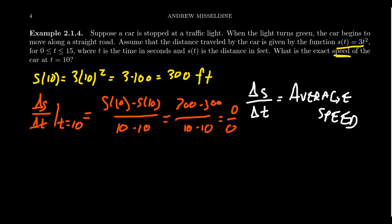The problem is that the difference quotient measures a change between two points — we need two different points in time. In order to compute the so-called instantaneous speed, or instantaneous rate of change at an exact point in time, we can try to approximate the exact speed using average speed by making the time increments smaller and smaller. For example, what if we look at the change of s over the time interval from 10 to 10.1 — just a tenth of a second?